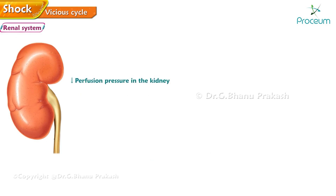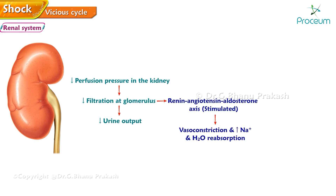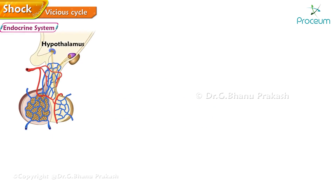Renal system: Decreased perfusion pressure in the kidney leads to reduced filtration at the glomerulus and decreased urine output. The renin-angiotensin-aldosterone axis is stimulated, resulting in further vasoconstriction and increased sodium and water reabsorption by the kidney.